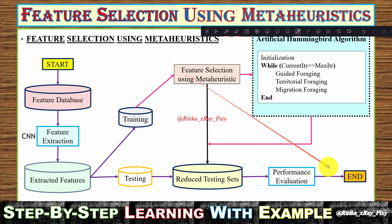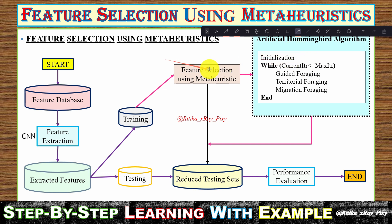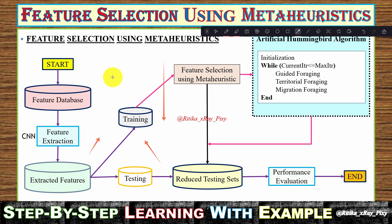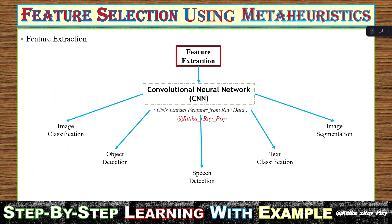After evaluating the solution, we display the result. To summarize the process: start with the feature dataset, extract features, perform testing and training on extracted features, apply meta-heuristic metrics for feature selection, reduce the feature set, and then evaluate performance. For performance evaluation, metrics such as true positive, true negative, false positive, and false negative can be used. That's all about this video — if you have any questions, comment below, and thanks for watching.